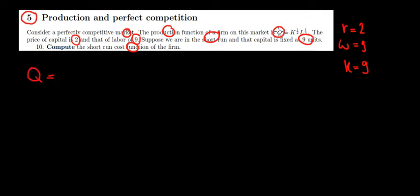We would have that capital to the power a half, so 9, which is fixed, to the power 1 over 2, multiplied with labor to the power 1 over 3. Now what is 9 to the power 1 over 2? That's equal to 3.